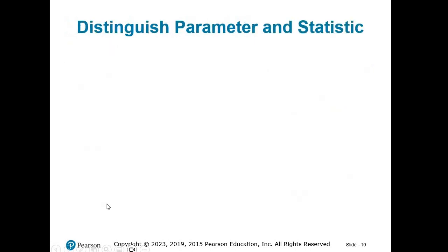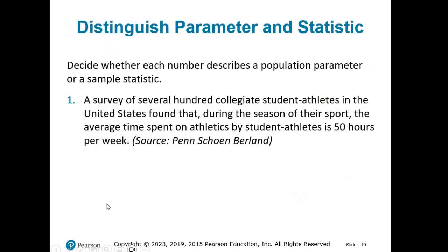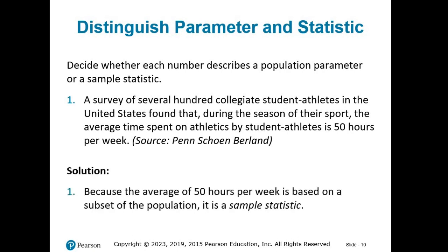Let's do some practice problems. A survey of several hundred collegiate student-athletes in the United States found that, during the season of their sport, the average time spent on athletics by student-athletes is 50 hours per week. Pause the video and decide if the number given is a population parameter or a sample statistic. There are obviously more than several hundred college student-athletes in the country, so this set of responses is only part of the population — a subset or sample. Because the average of 50 hours per week is based on a subset of the population, it is a sample statistic.